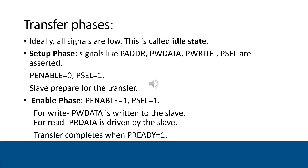Coming to transfer phases. In the idle phase, all signals are at their default values. In the setup phase, when PSEL is asserted, the peripheral is selected, and signals like PWDATA, PWRITE, and PADDR must all be valid and asserted during this phase. In the enable phase, PENABLE is asserted. For write transfers, data is written to the slave; for read transfers, data is driven by the slave. The transfer completes when PREADY goes high.